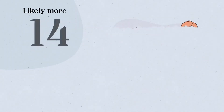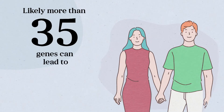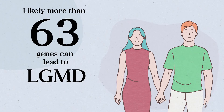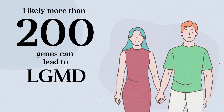To date, more than 35 genes have been associated with the limb-girdle muscular dystrophies. The reality is that likely more than 200 genes can lead to a limb-girdle phenotype.